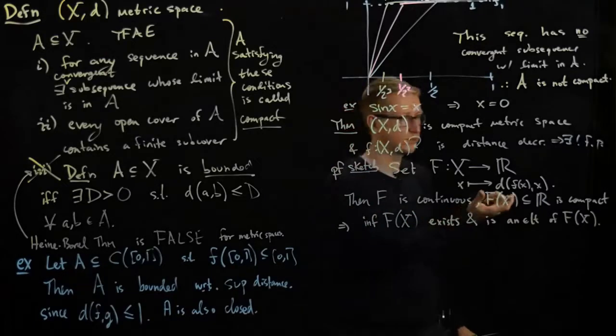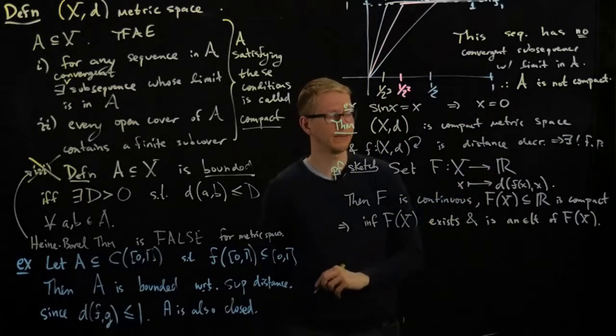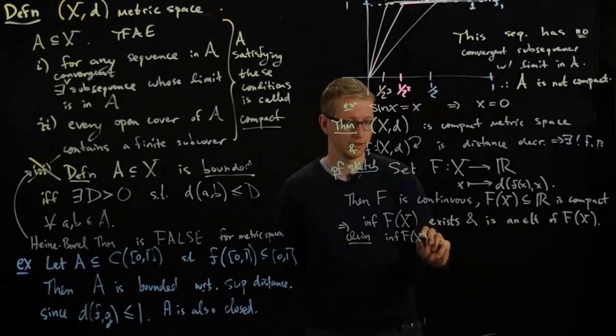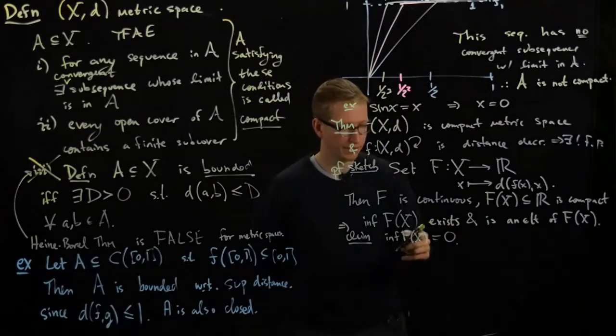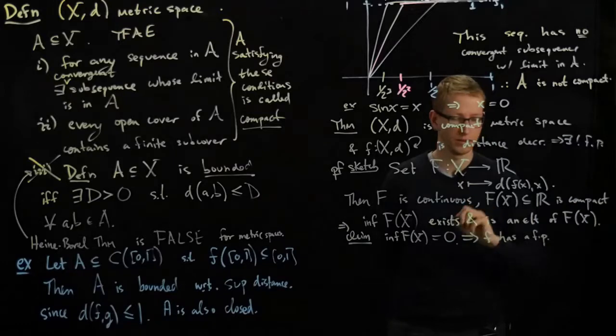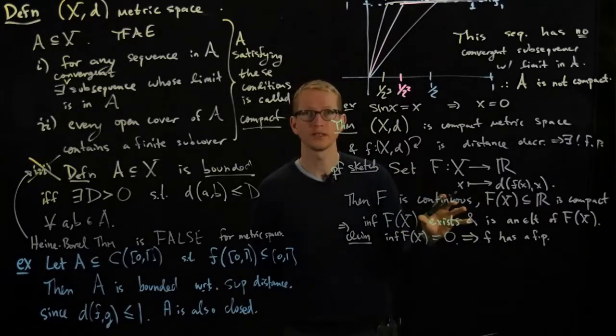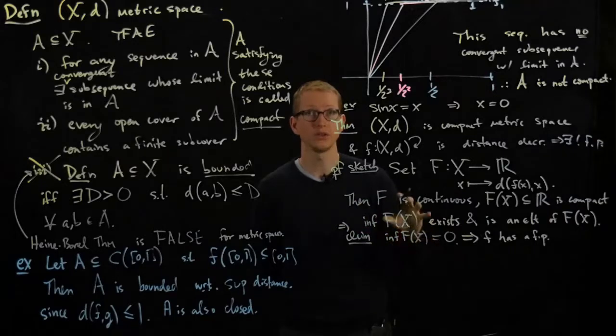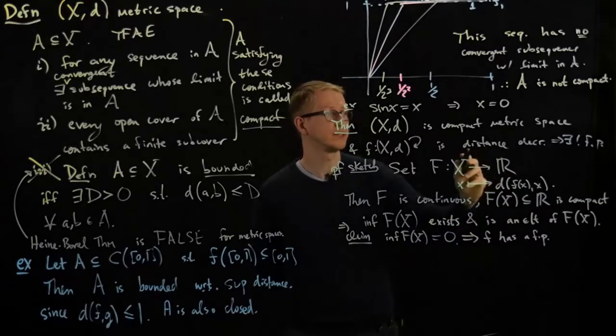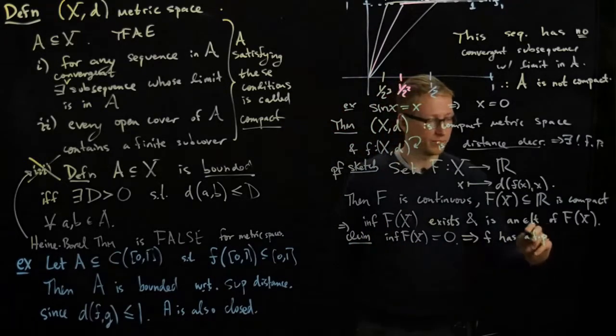And therefore there exists a smallest distance between some point x here and f of x. The claim is that this distance is actually equal to zero, and this implies that f has a fixed point. And by the proof that we've actually outlined before that shows the uniqueness of a fixed point under a contraction, actually transfers to the proof that a fixed point is unique even for a distance decreasing function if one exists. That's also something I leave for you as an exercise. So it has a unique fixed point.